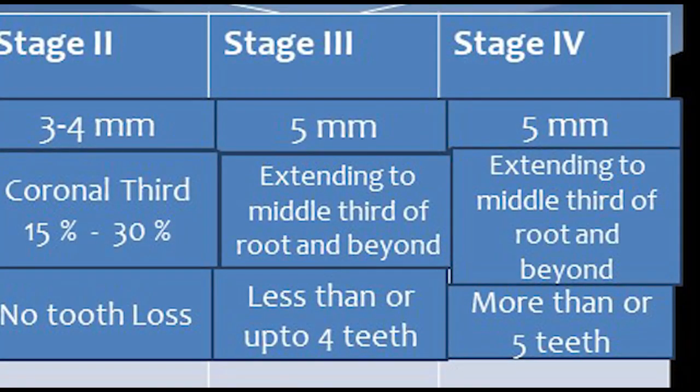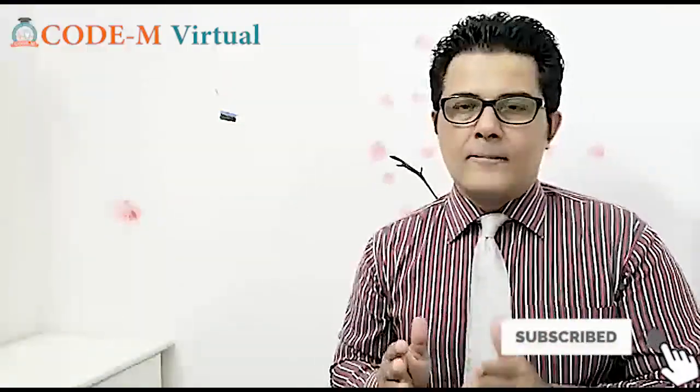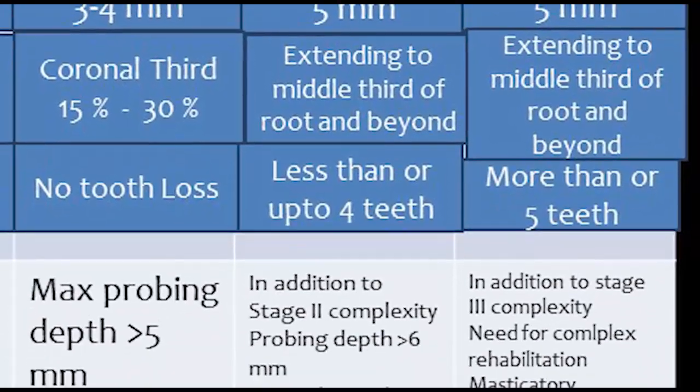Now Stage 4. Stage 4 again has clinical attachment loss of 5 mm. The RBL will be extending to the middle third of the root and beyond. There should be more than 5 teeth lost — at least 5 or more — and it should be due to periodontitis; there should not be any other reason. In addition to this, when we go for the complexity of Stage 4...